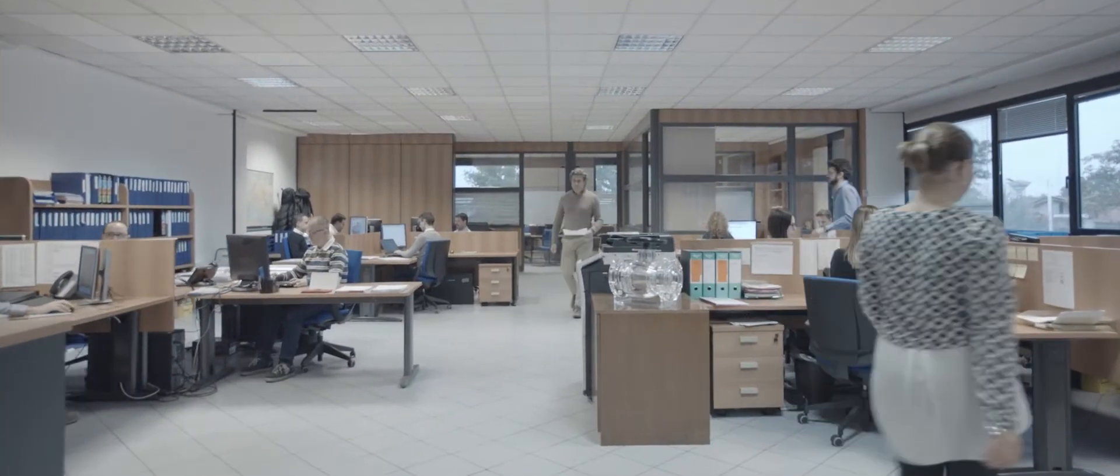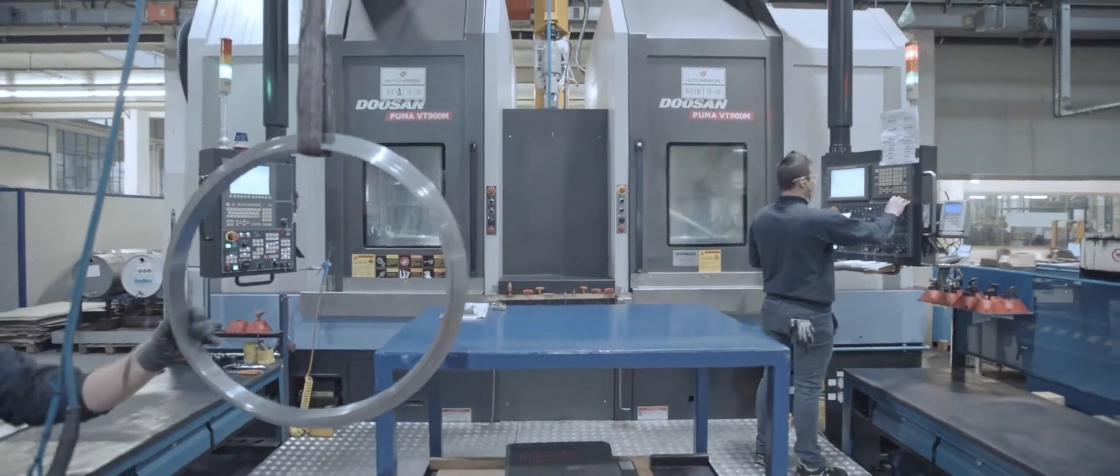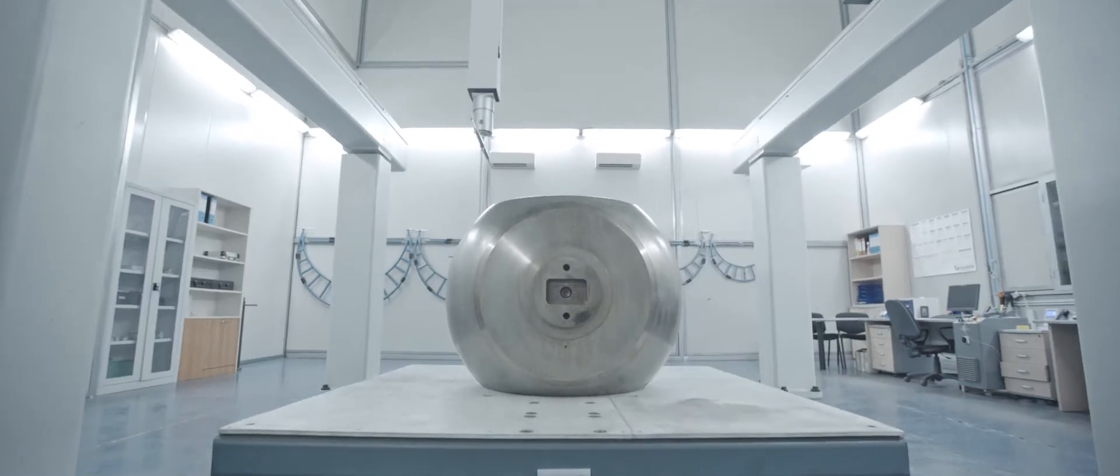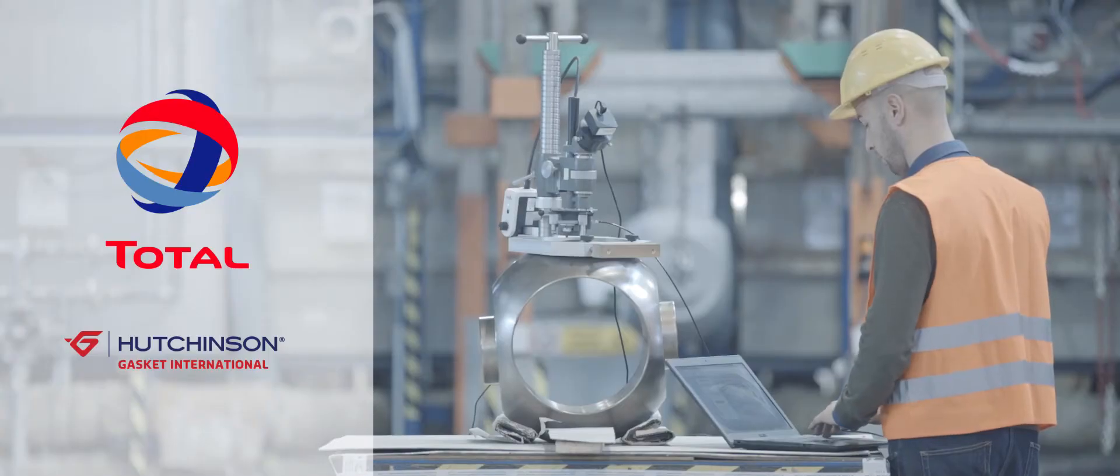Gaskit International is the leading global producer of premium quality engineered valve sealing solutions. Primarily focusing on oil and gas applications, we're proud to be part of the Hutchinson Group owned by Total.